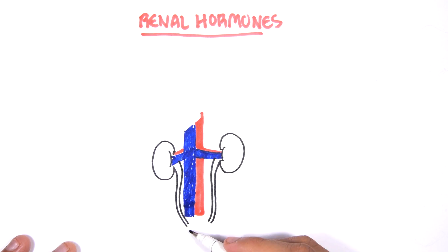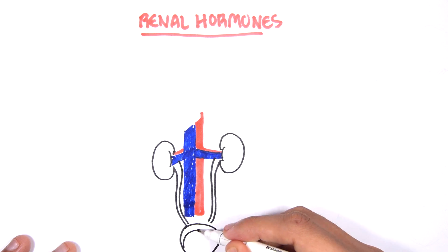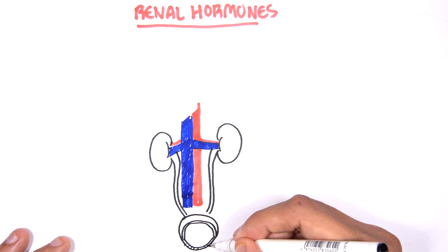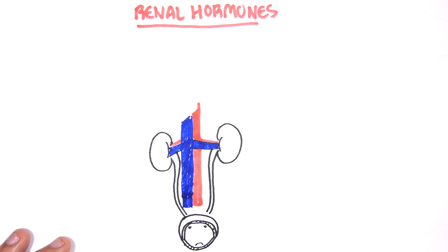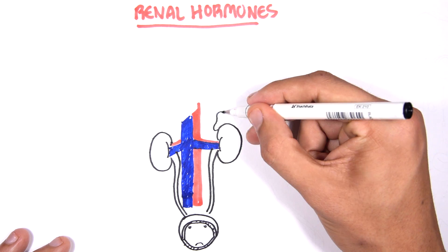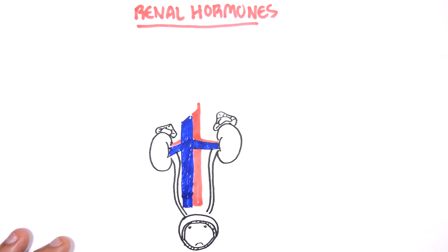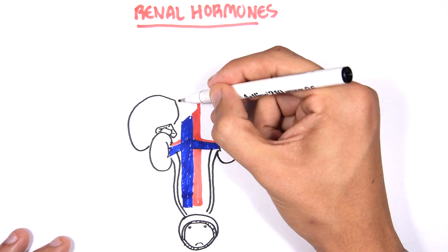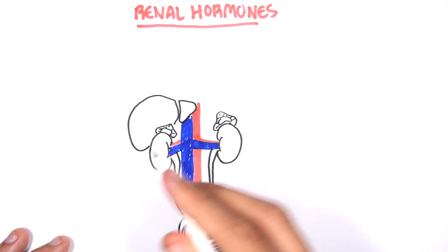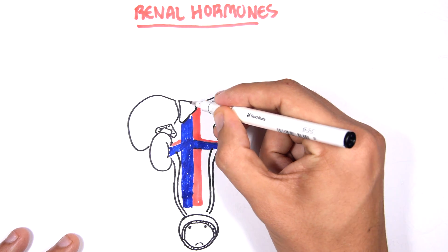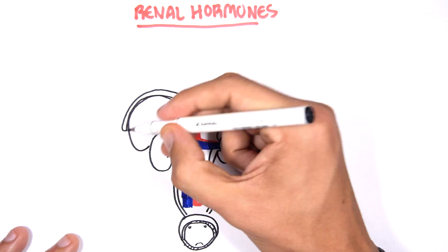Coming off the kidneys, you have the ureter, where urine will then be stored in the urinary bladder. Now above the kidneys, you have glands known as adrenal glands. And above the right kidney, you have the liver. And above everything else, you have the diaphragm, which separates the thoracic cavity from the abdominal cavity.